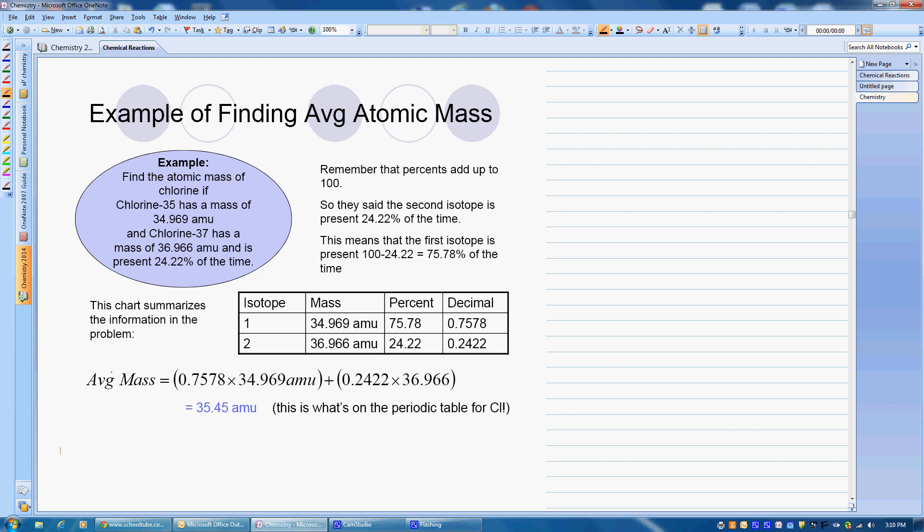Okay? So what we do then, and this is written down here, but I'm going to rewrite it. We're going to take the mass of our first isotope, which is 34.969, and we multiply that times our percentage written in a decimal format. Then we're going to add to that, whatever that answer is, our second mass times its percentage.